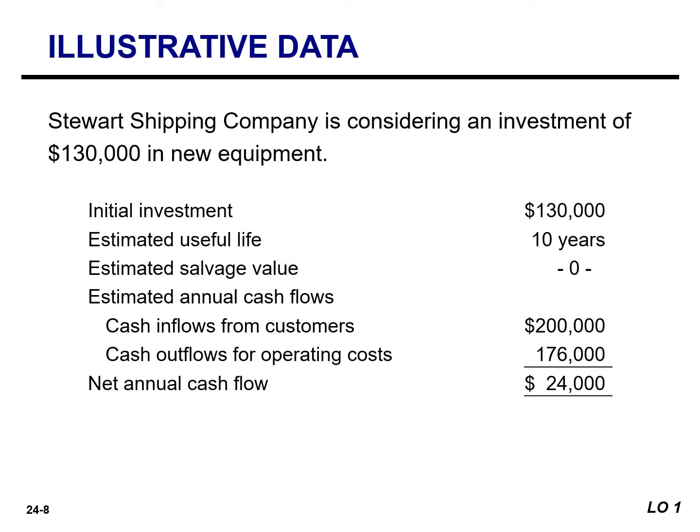To illustrate the various capital budgeting techniques, we will use Stewart Shipping Company. They are considering an investment of $130,000 in new equipment. The new equipment is expected to last 10 years, it will have a zero salvage value at the end of its useful life, and the net annual cash flows are $24,000.